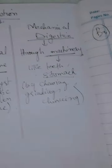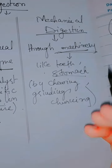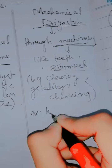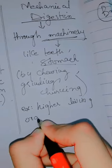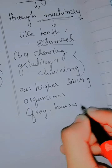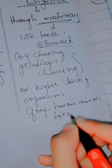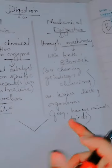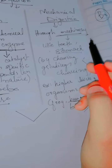Higher living organisms like frogs, humans, animals, and birds all have both mechanical digestion and chemical digestion.